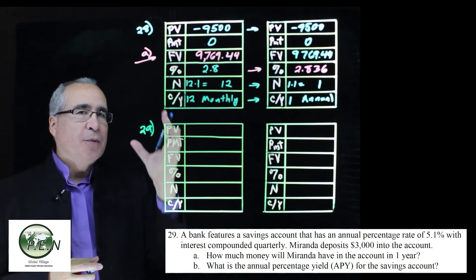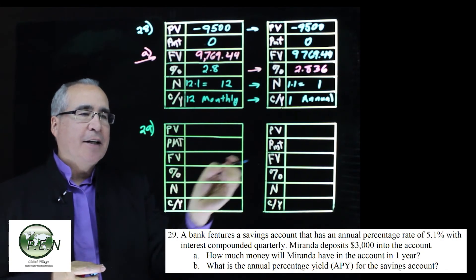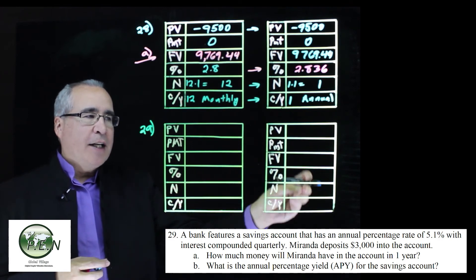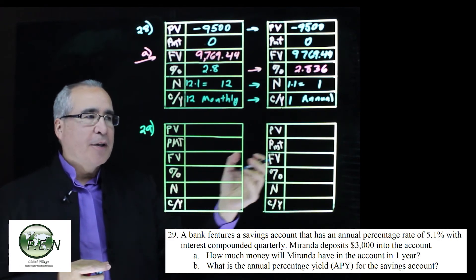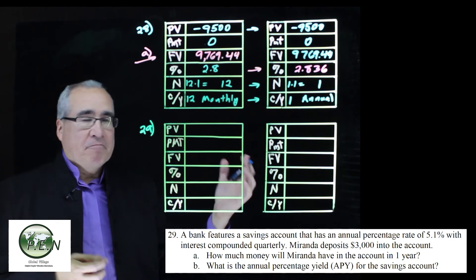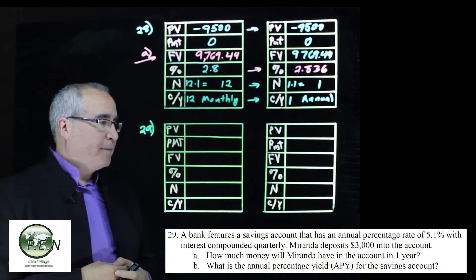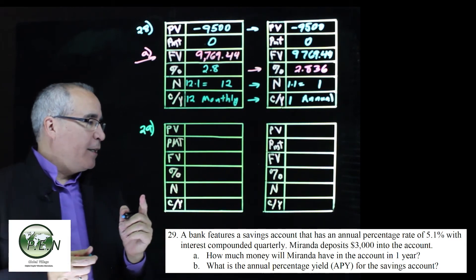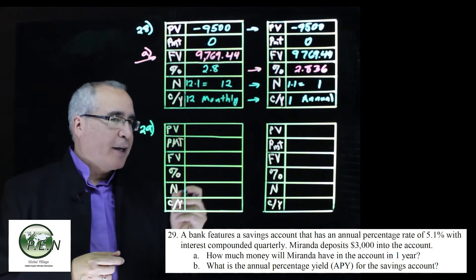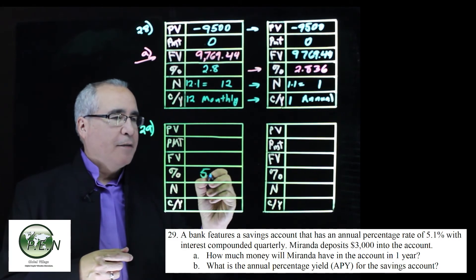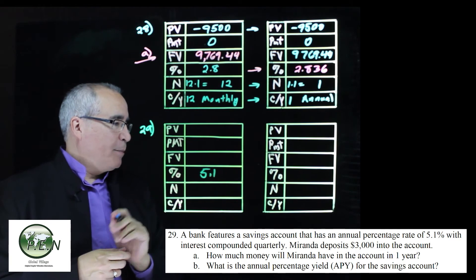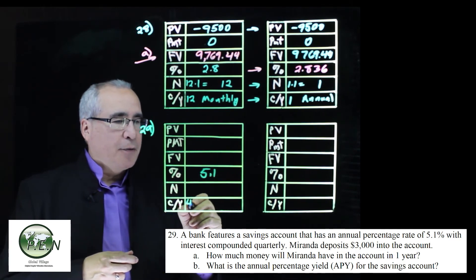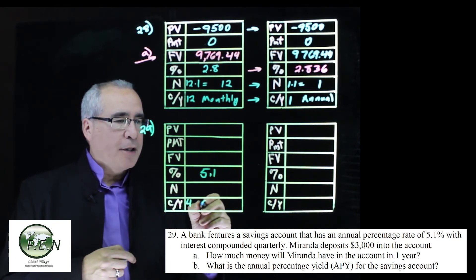29. So notice we're going to do one set of calculations first to get everything filled in, change it from whatever monthly, quarterly to annually, and then we'll get our APY. So 29, we've got a bank account with 5.1%, 5.1, compounded quarterly, so there's four times in a year for quarterly.